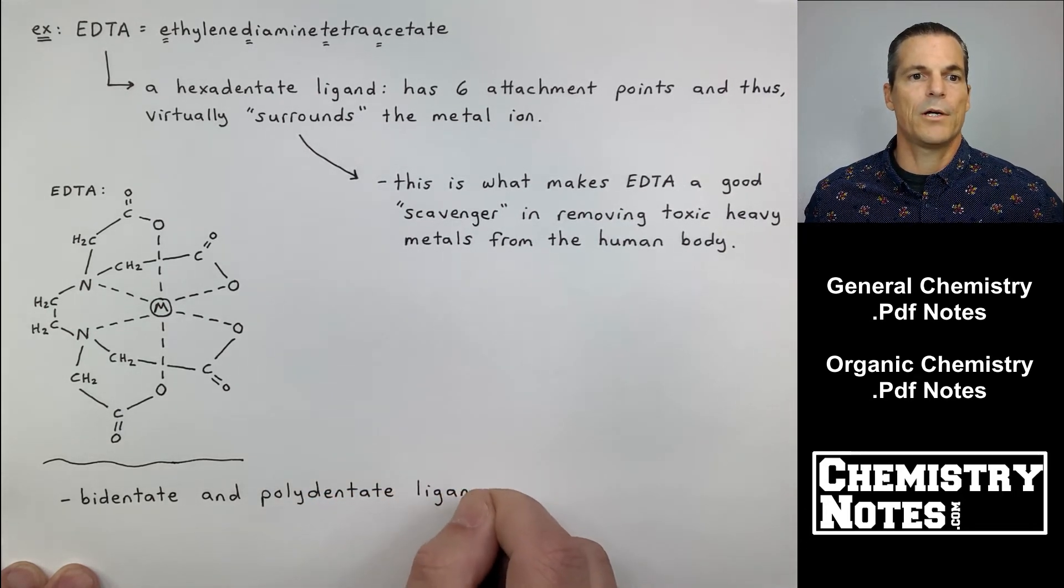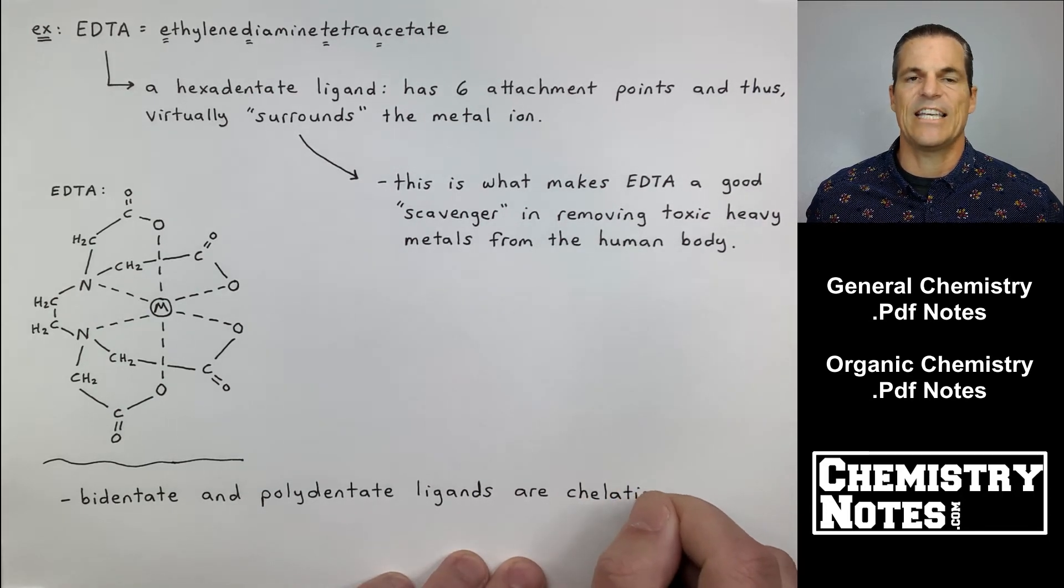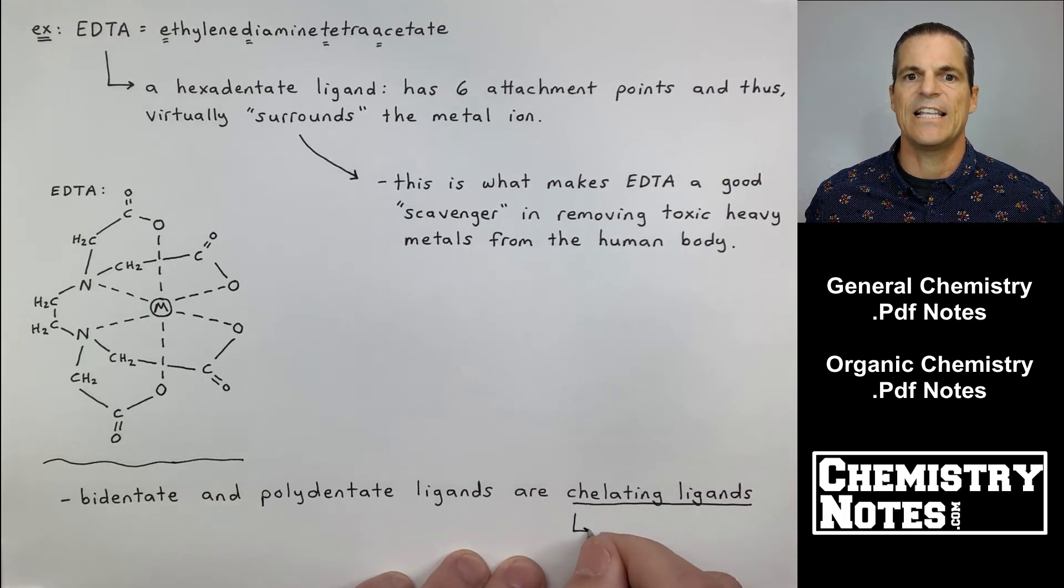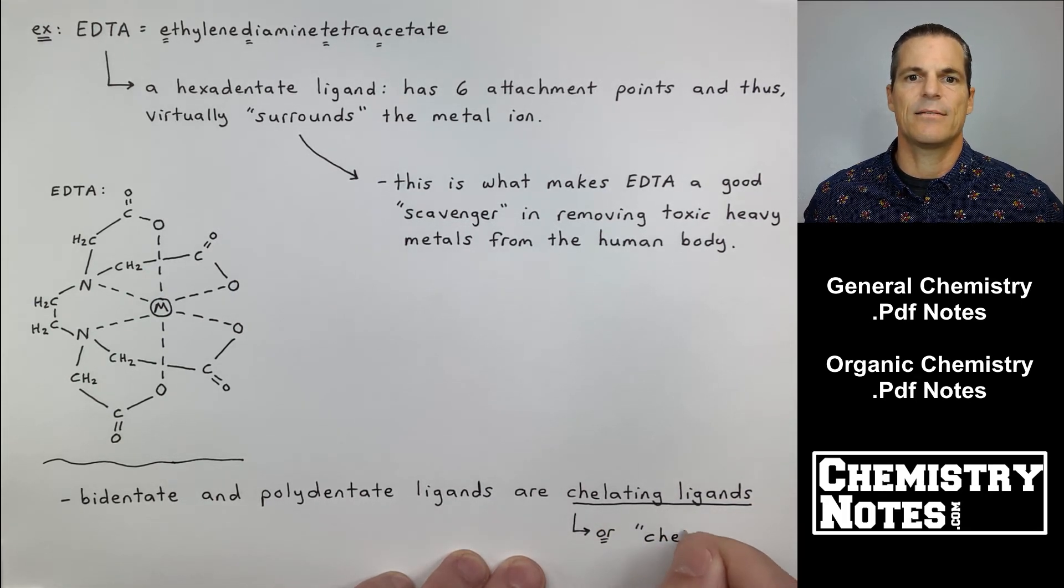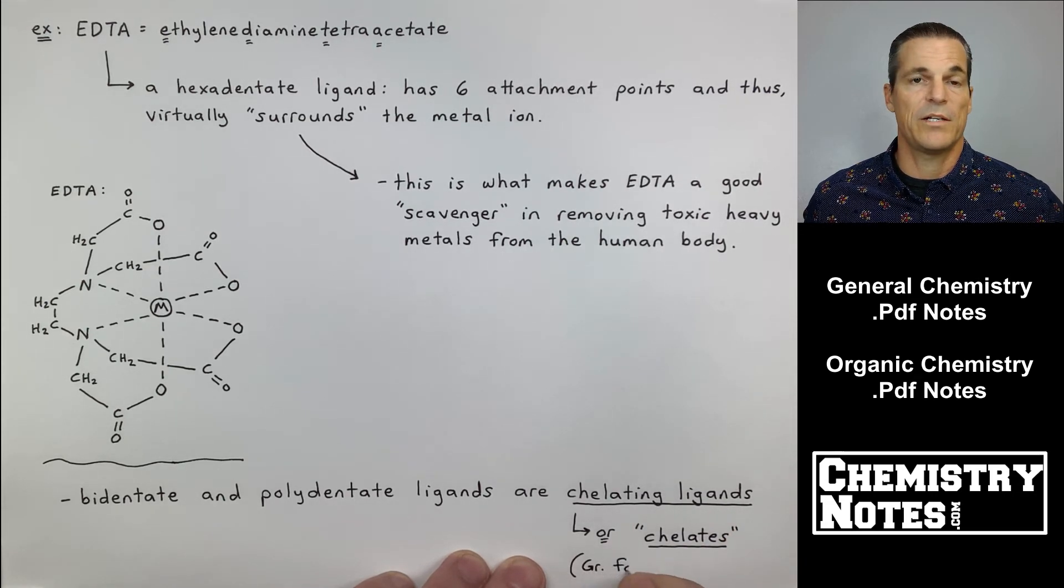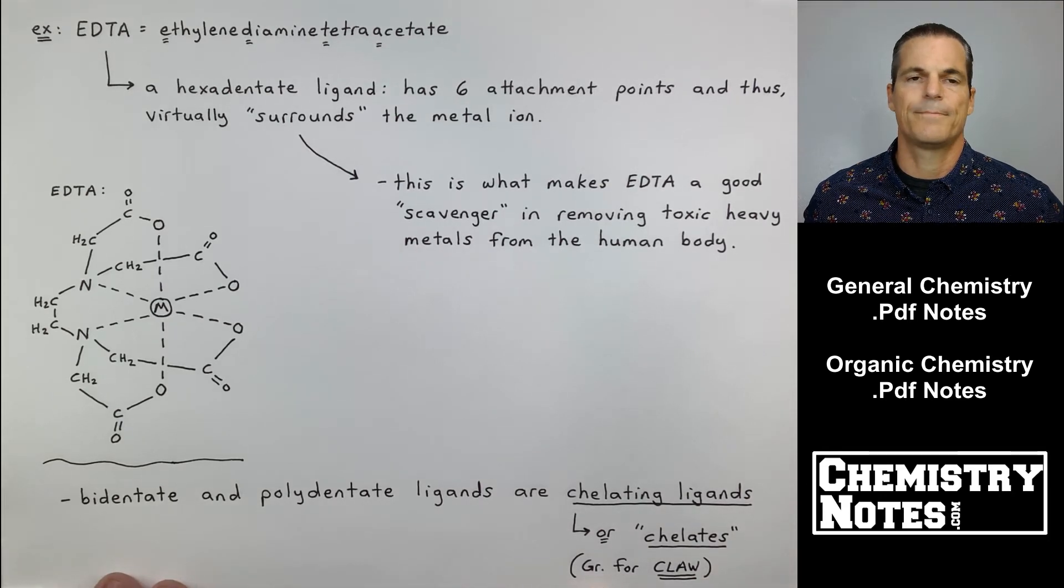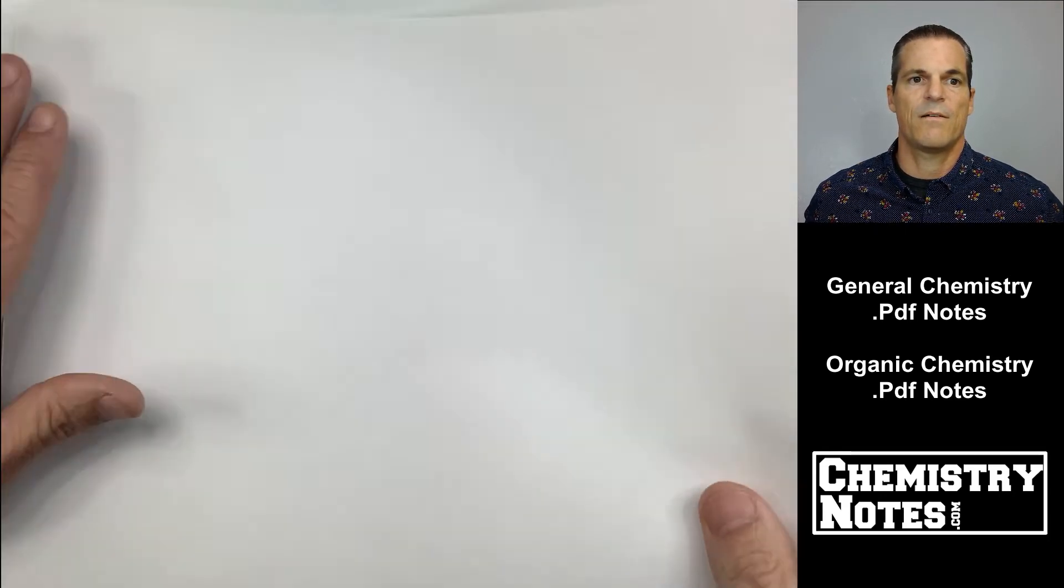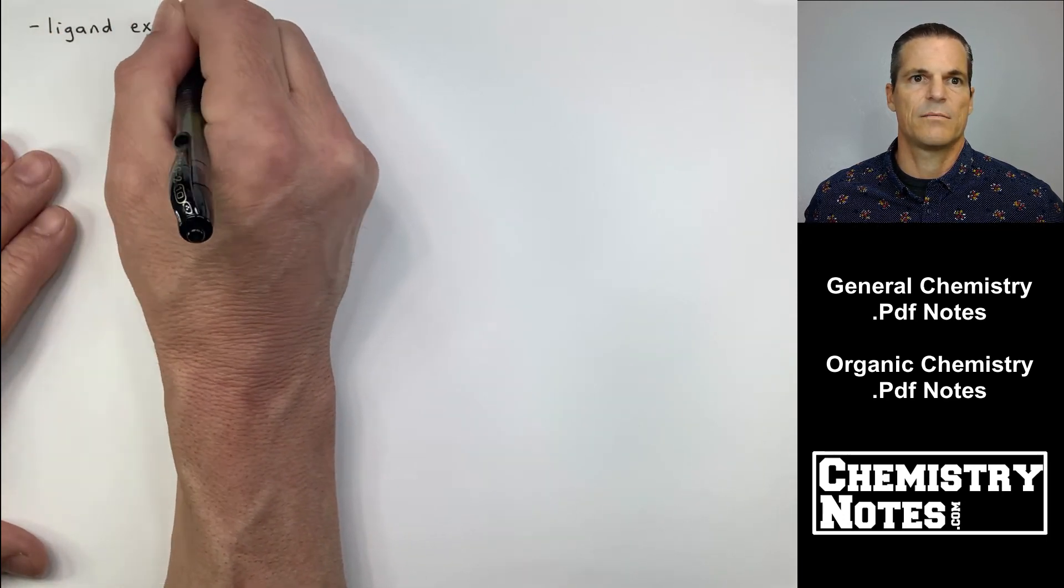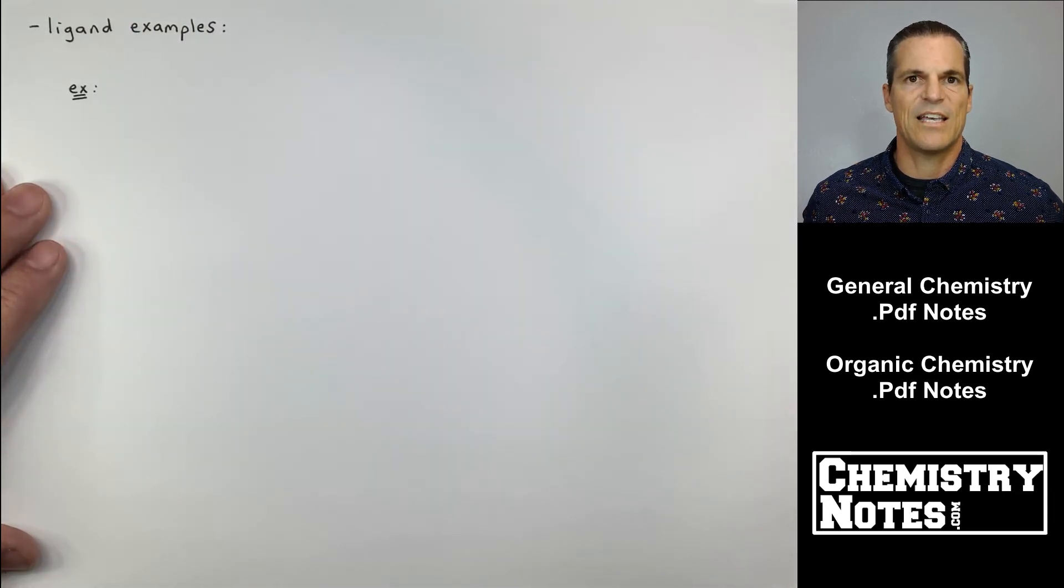At the bottom of the page, I have a blurb here. I want to read it to you. It says, bidentate and polydentate ligands are chelating ligands. So yet another new term, chelating ligands. Chelating ligands are also referred to as just plain old chelates. Chelate, by the way, is a Greek word for claw. So it's a very fitting description of these types of ligands, bidentate and polydentate ligands. All right, here are some ligand examples.